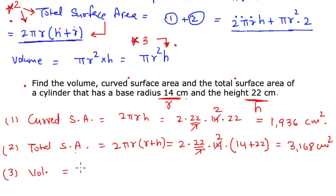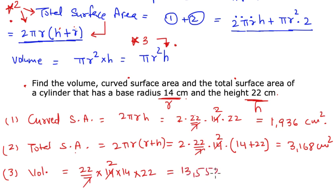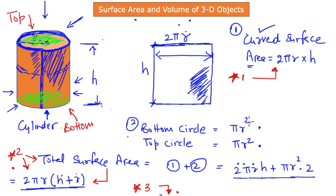Finally, the volume. Using the expression πr²h: (22/7) × 14 × 14 × 22. The 7 cancels with 14 to give 2, and this computation equals 13,552 cm³. So these are our three results — the key points are how we derive the surface area by imagining unfolding the cylinder, then computing total surface area and volume.